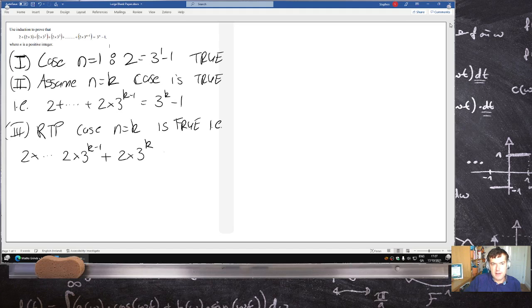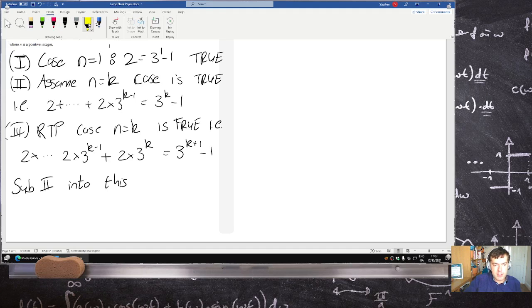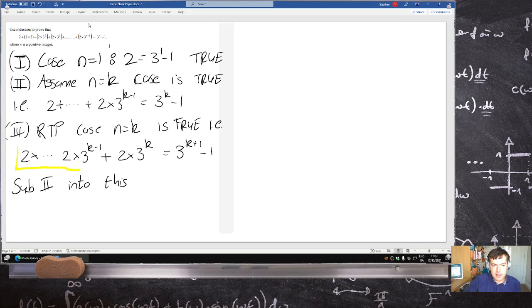...equals 3 to the k plus 1 minus 1. So substitute step 2 into this. That's replacing all of this with that, because you can see that's the same thing in both lines.